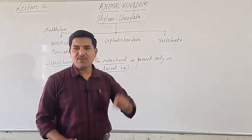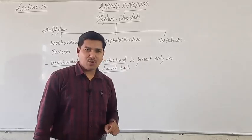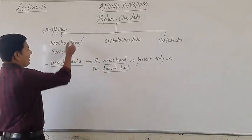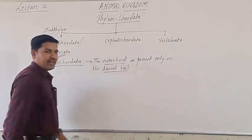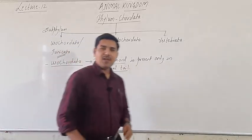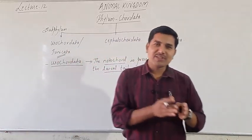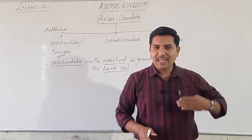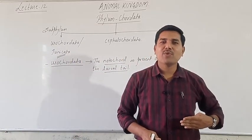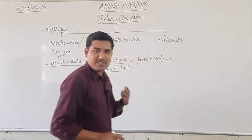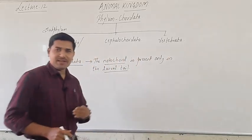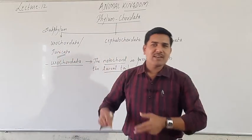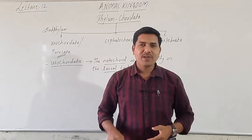The tail region consists of the notochord. Now, why is this also called Tunicata? Urochordata are also called tunicates because of a layer present on the body called the tunica, which is a membranous layer. Generally they are present in marine water, attached to rock surfaces or hard substances in the oceans.